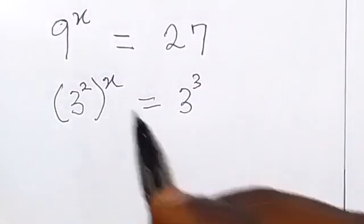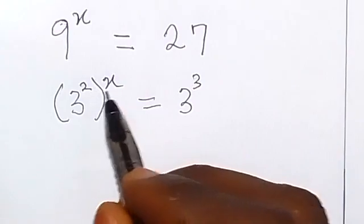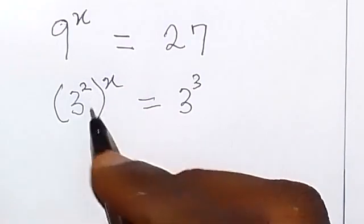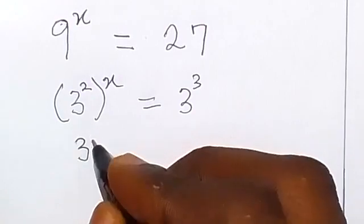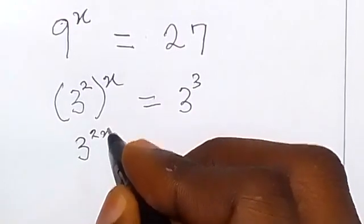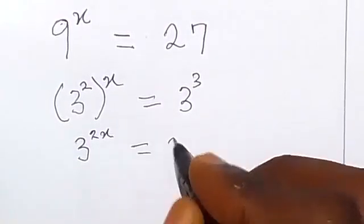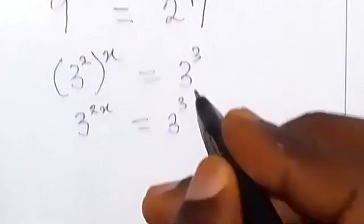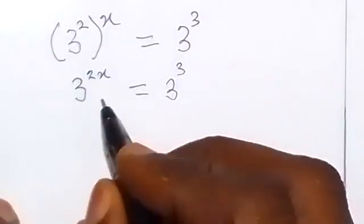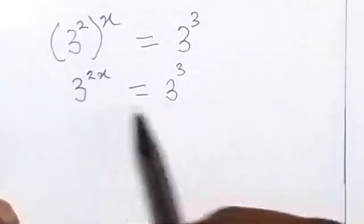And from here now we have this power multiplied and this becomes 3 raised to power 2x equals to 3 raised to power 3. From there we can say that since the bases are the same, then we can equate the powers.